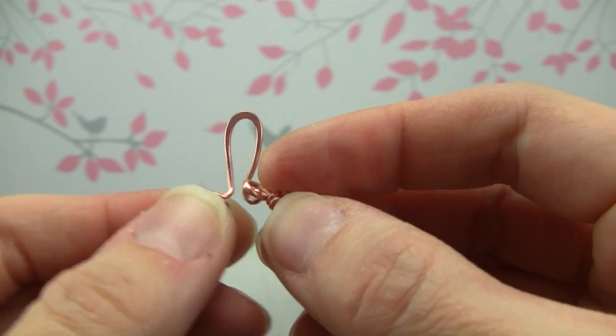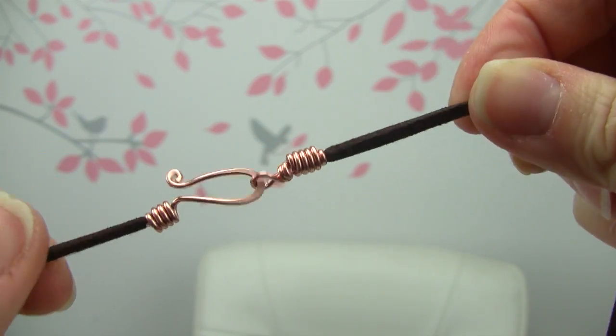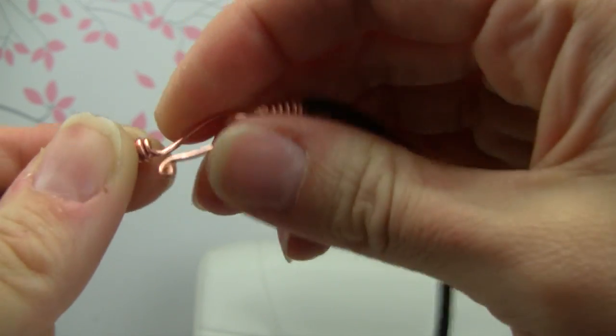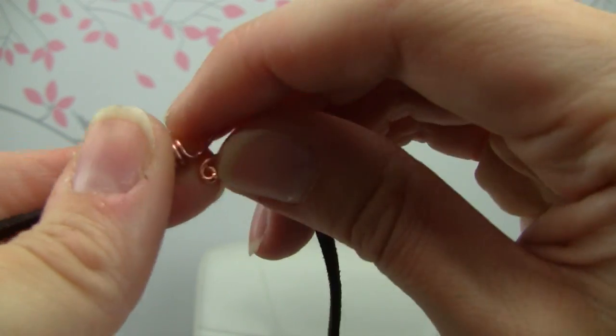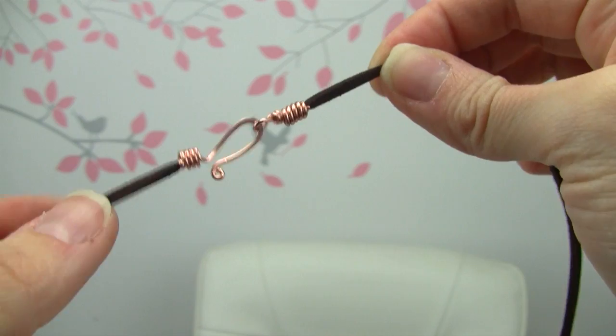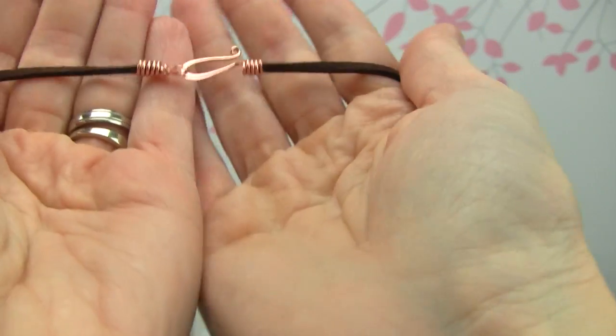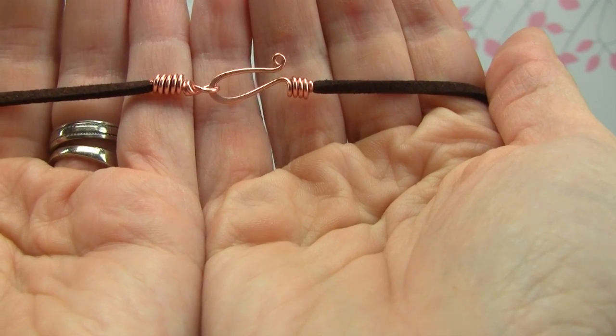All right. So I went ahead and hammered that. And now I can close it and kind of reshape it a little bit if you want to. I like for mine to not have much of a gap there so there's not a lot of room for it to slide off. But that's it. That's how you make a hook and clasp for a cord. So thank you so much for watching and I'll see you next time. Bye.